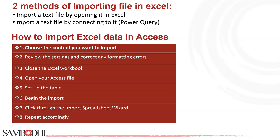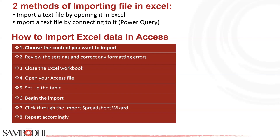You can also import a text file by connecting to it using Power Query. You can import from a text file into an existing worksheet. On the Data tab, in the Get and Transform Data group, click From Text/CSV. In the Import Data dialog box, locate and double-click the text file you want to import and click Import. In the preview dialog box, you have several options. Select Load if you want to load the data directly to a new worksheet.